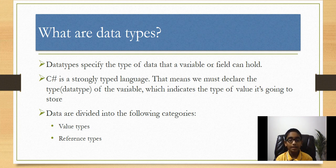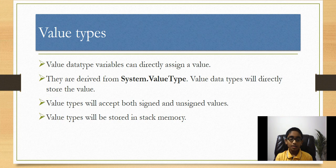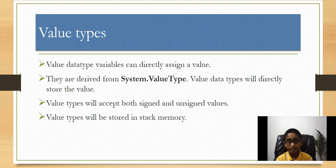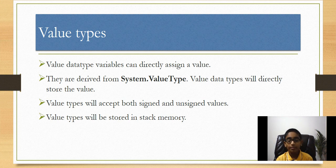First we're going to talk about value types and then reference types. Value data type variables can directly assign a value, which I'll show in the Visual Studio demo. Value data types are derived from System.ValueType. Value data types will directly store the value, not the reference like reference types. Value types will accept both signed and unsigned values.